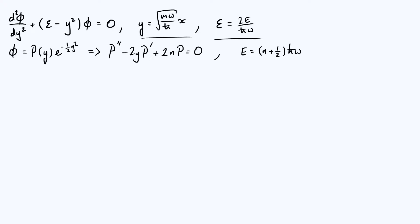Next we made an educated guess that the form of the wave function phi may be a polynomial p times e to the minus half y squared, and we showed that if phi is to have that form, then the polynomial function p should satisfy the differential equation p double dash minus 2y p dash plus 2n p equals 0, where n is a natural number. In doing so, we also concluded that the energy is quantized — it can only take certain values, given by a natural number plus a half times h-bar omega.